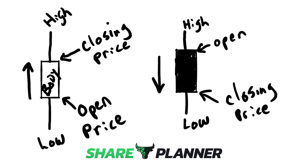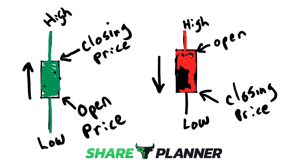Pretty simple, right? Some apps or charting platforms are not going to make a difference with the bodies. The bodies will just be green when it's a positive day. They may even just make the shadows green. And for a negative day, that'll just be red and it'll fill in the shadows. Most of your charting platforms are going to give you the options, so it's basically a personal preference of how you want it to look.